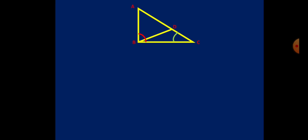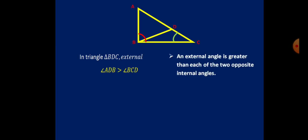Now concentrate on the smaller triangle BDC. From the picture, angle ADB is an external angle to triangle BDC. So ADB is greater than BCD, as an external angle is greater than each of the two opposite internal angles.